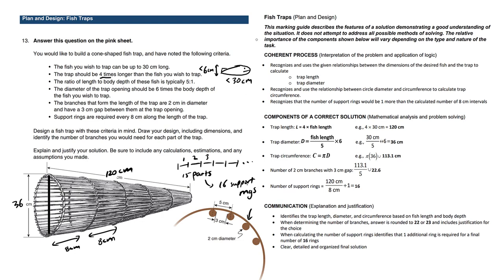Let's read this marking guide. So the way you show your work, you have to demonstrate a good understanding of the situation. We need to show a coherent process. We need to calculate the trap length and diameter. And we have to be careful using circumference. And just how we reasoned right now, we need to recognize that the number of support rings would be one more than the calculated number of 8 centimeter intervals.